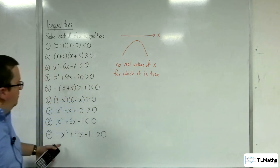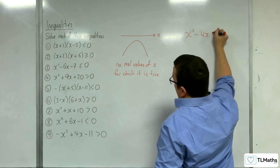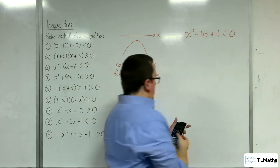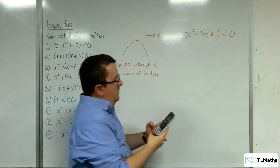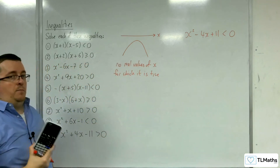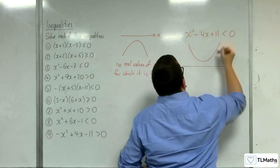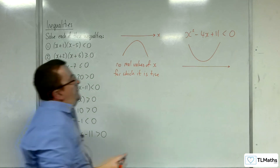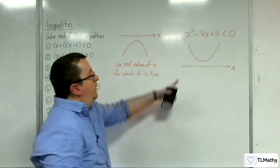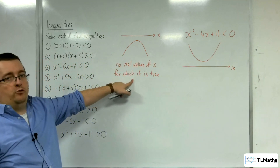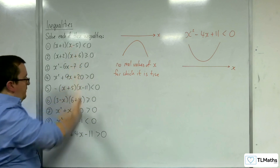Alternatively, multiplying through by −1 gives x² − 4x + 11 < 0. The quadratic solver still gives 2 ± √7·i — still no real roots. Now you have a positive parabola sitting above the x-axis, and you're asking where it's below — which it never is. So again, there are no real values of x for which it is true. That's how we solve each of these nine inequalities.